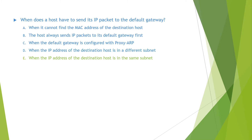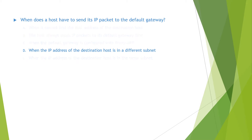When the IP address of the destination host is in a different subnet; when the IP address of the destination host is in the same subnet. We know that when the IP address of the destination host is in a different subnet, the host has to send its IP packet to the default gateway. So the answer is D. You can find the detailed explanation in the video.